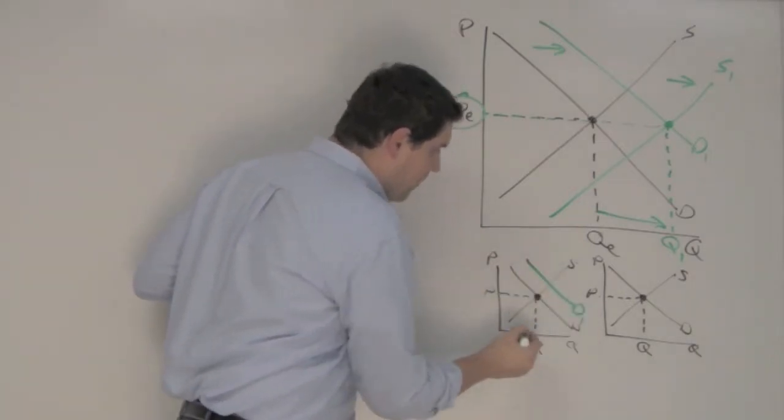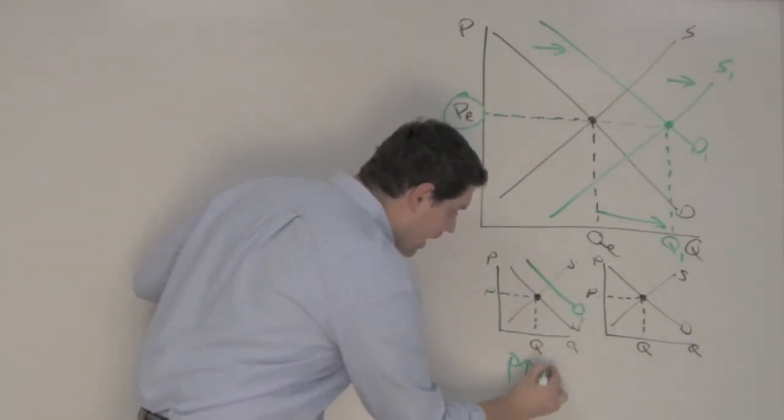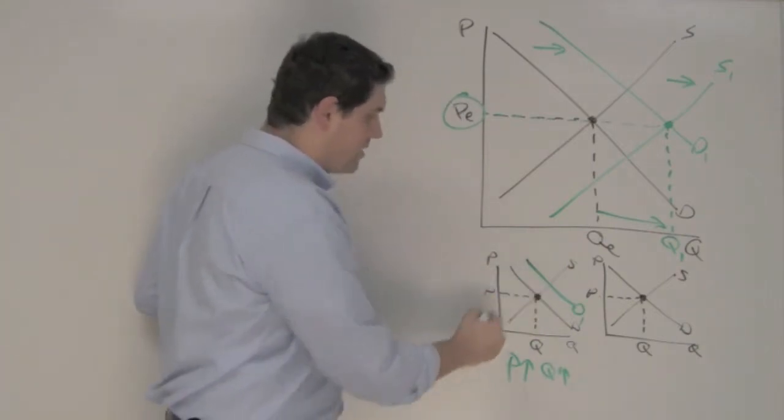Right here, the demand goes up, which would cause price to go up and quantity to go up. Right? That's what the graph says.